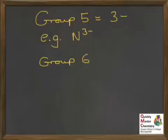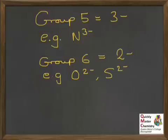Group 6, we only need to gain 2 electrons to get up to the stable 8, so 2-, remembering gaining electrons gives you a negative charge. And so gaining 2 electrons, 2-. So things like the oxide ion O2-, sulfide S2-, and so on.